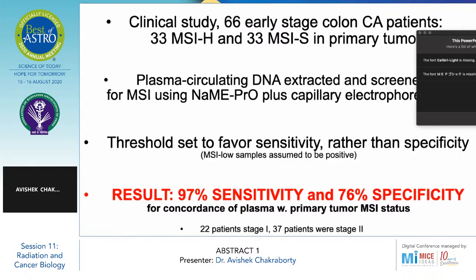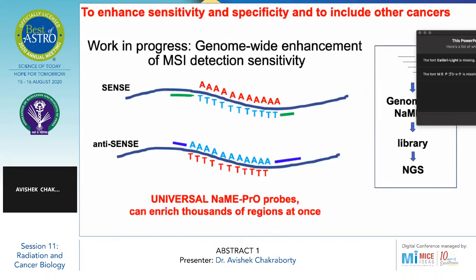Twenty-two patients had stage 1 disease and 37 patients had stage 2 disease. This slide shows how to enhance sensitivity and specificity and to include other cancers. Work is in progress on genome-wide enhancement of MSI detection sensitivity, shown by sense and non-sense strand analysis.